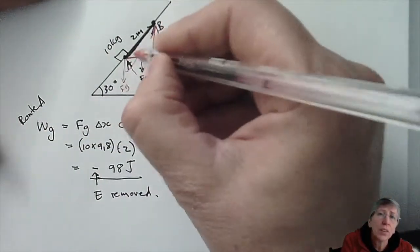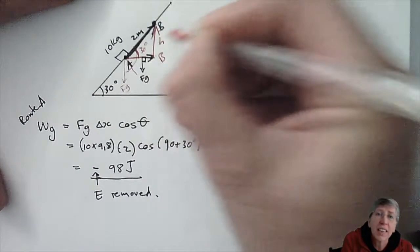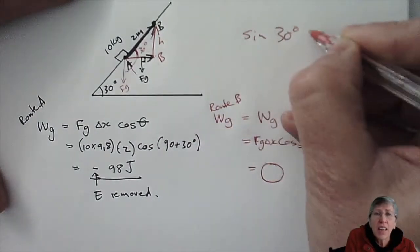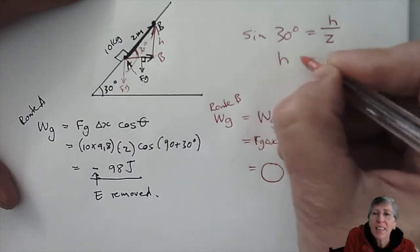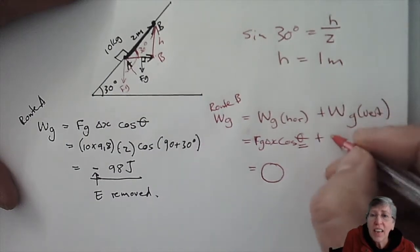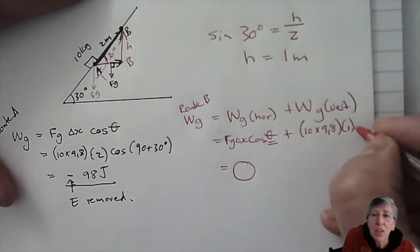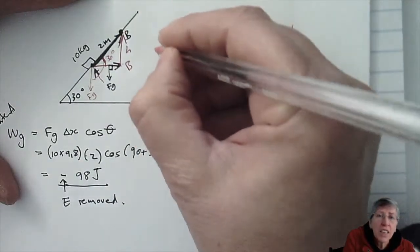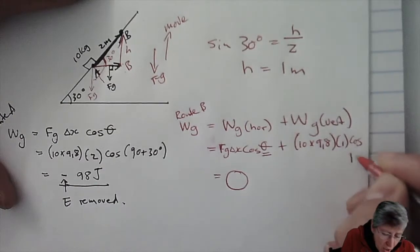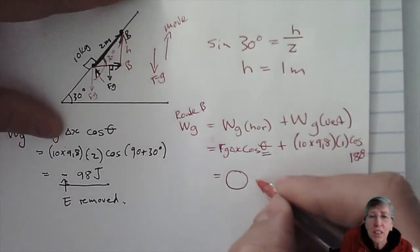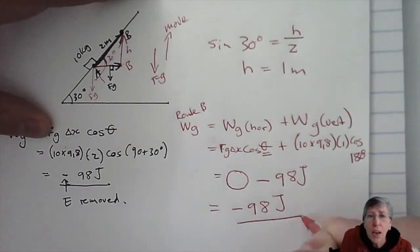Now looking at the vertical part — I need that height. Using sine of 30 = height / 2, giving height = 1 metre. So the work done is 10 × 9.8 × 1 × cos180. Gravity is working downward and I am moving up, so the angle is 180°, giving minus 98 joules. The total work done by gravity for Route B is also minus 98 joules.